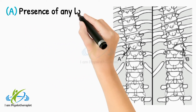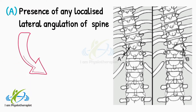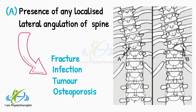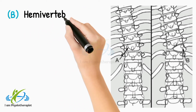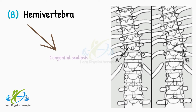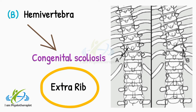In this radiograph, point A shows the presence of any localized lateral angulation of the spine due to lateral vertebral collapse — for example from fracture, infection, tumour, osteoporosis, or other causes. Point B shows hemivertebra, a common cause of congenital scoliosis, usually associated with an extra rib.